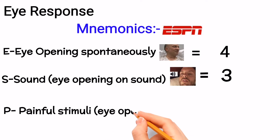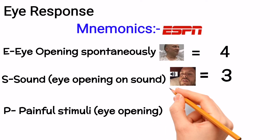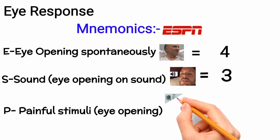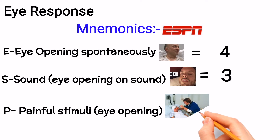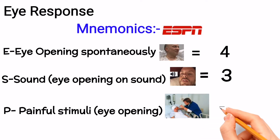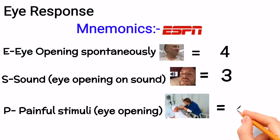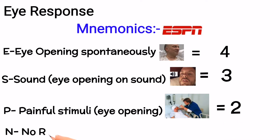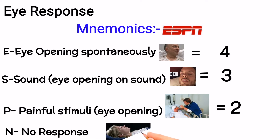P in ESPN is for Pain: you give pain to the patient at the supraorbital or forehead region and the patient opens his eyes, then the score will be 2. N in ESPN is for No response: if the patient did not open his eyes even on painful stimuli, then the score will be 1.